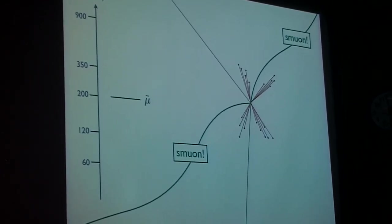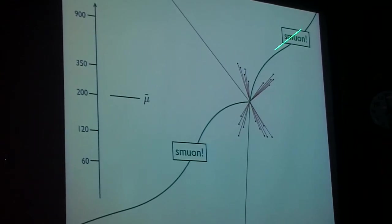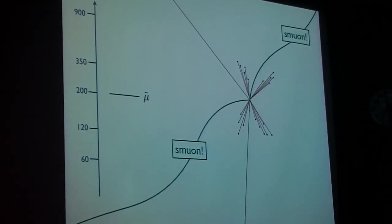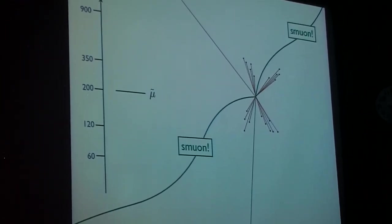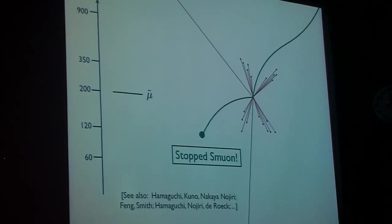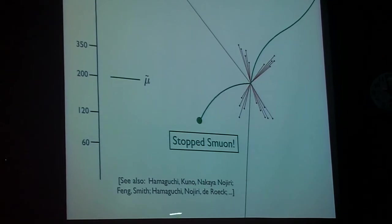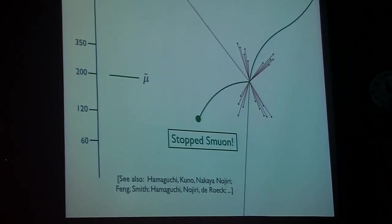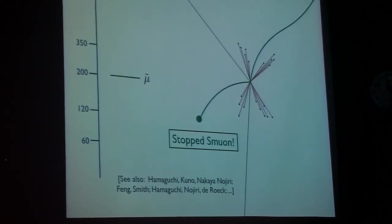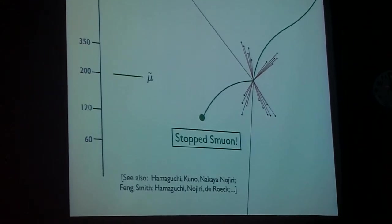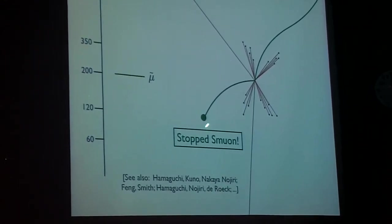What you can hope for is that in some of these events where you have pair production of smuons, sometimes one of the smuons is going slow enough that through ionization energy loss it gets stopped in your calorimeter. I've also cited people who talk about building an external stopper detector to CMS. The smuon is stopped.